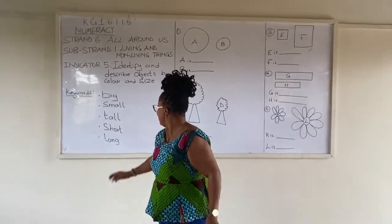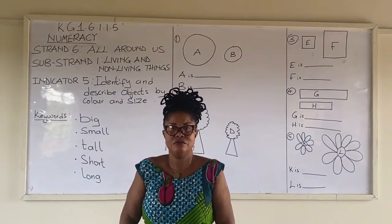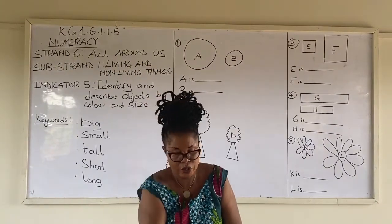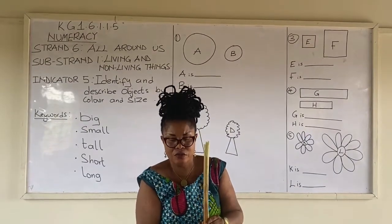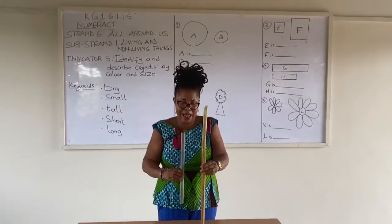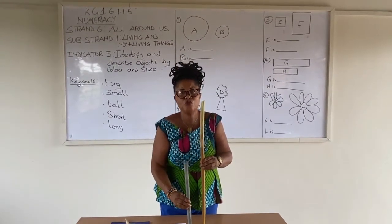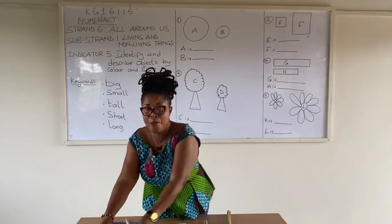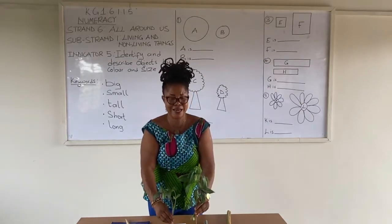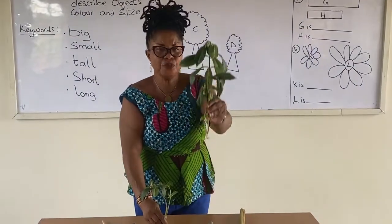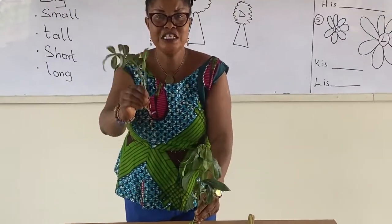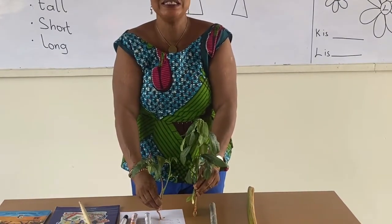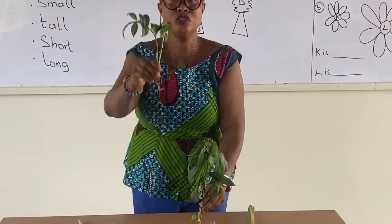Let's look at the word short. Short is the opposite of tall. This stick is tall. This other stick is also standing upright, but comparing to this one, this one is short. Let's compare these two plants standing: this plant is tall, this plant is short. Because they are standing upright, we use tall and short.